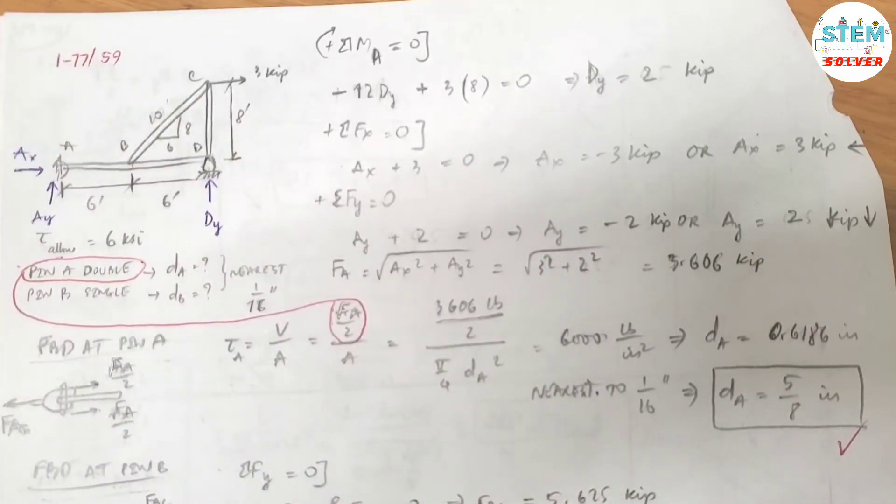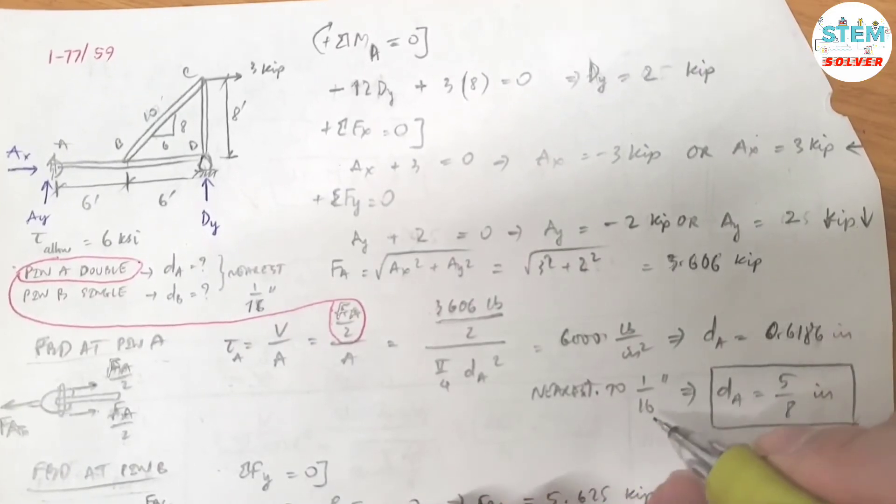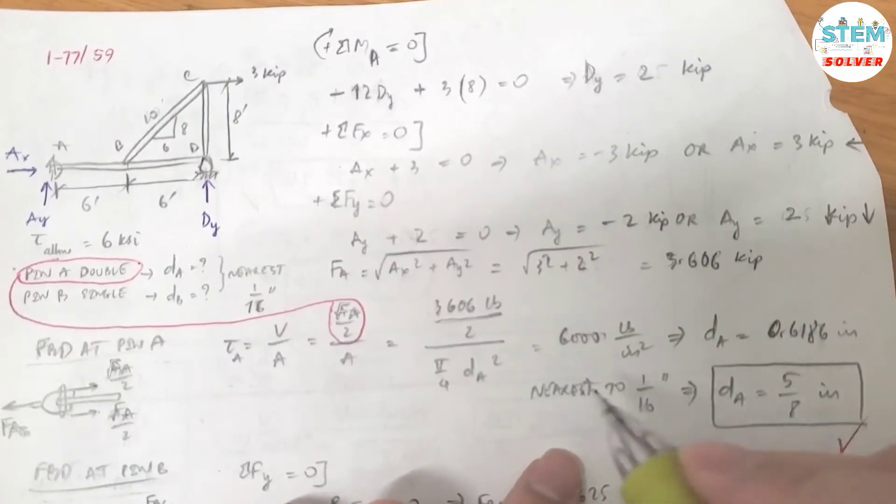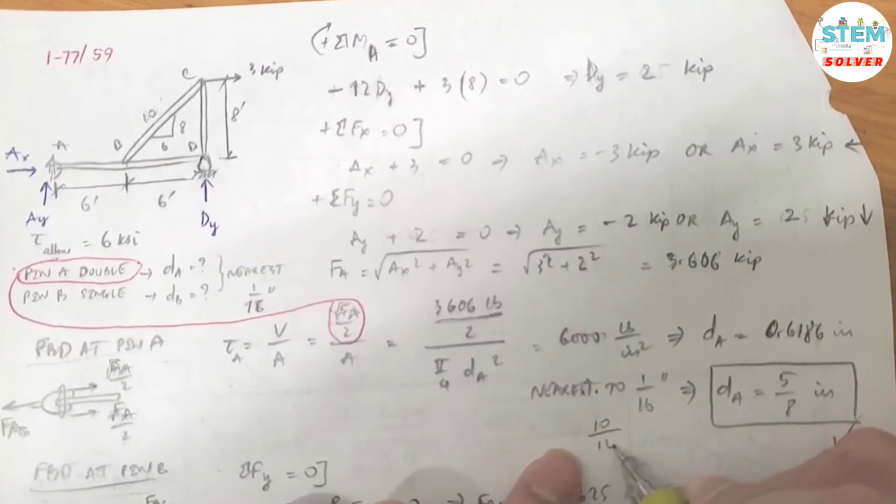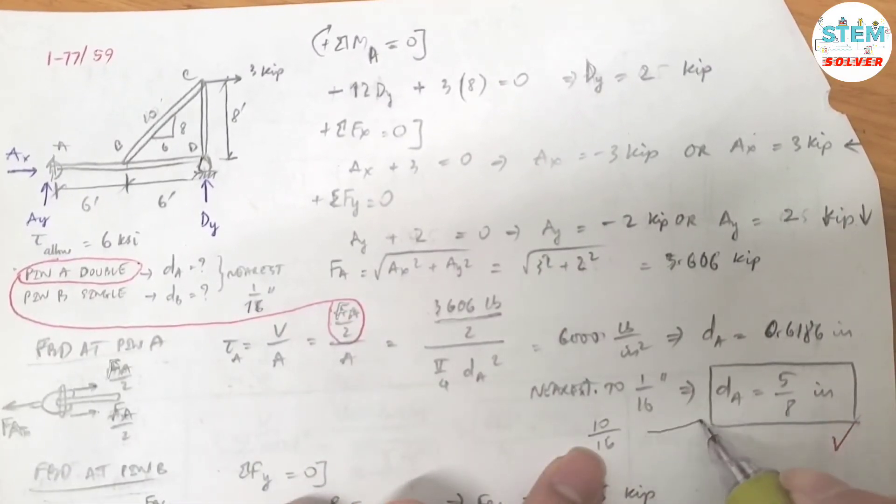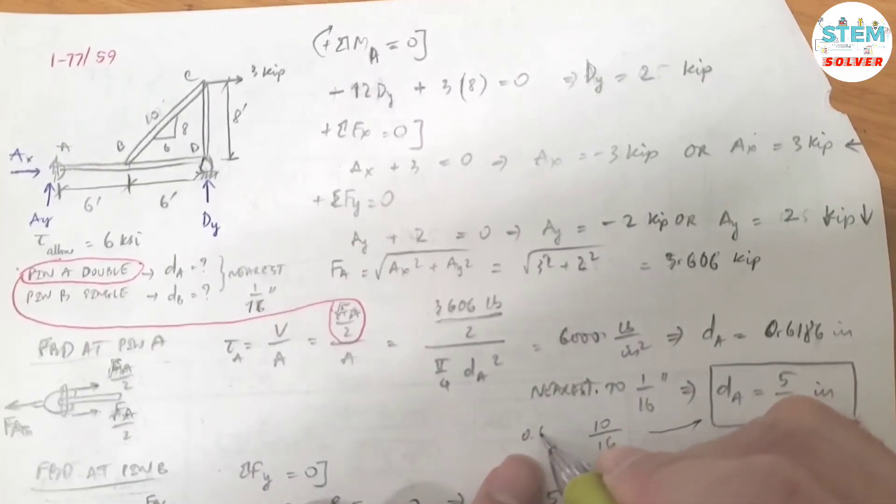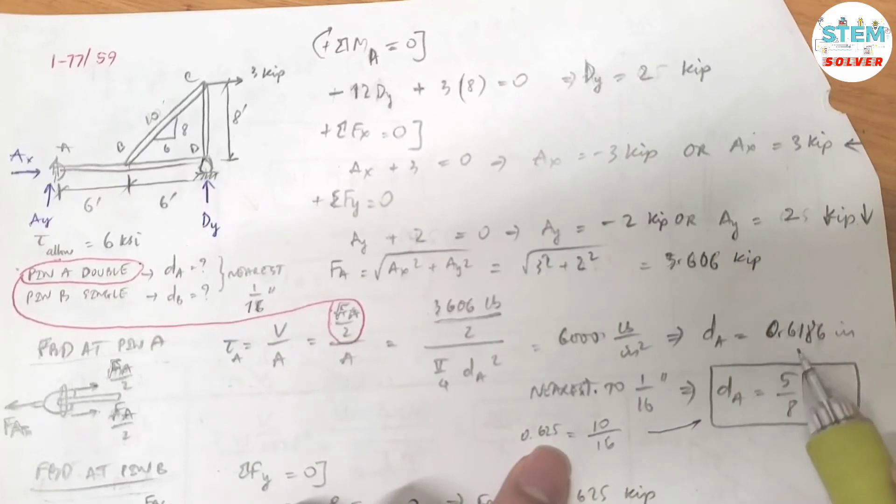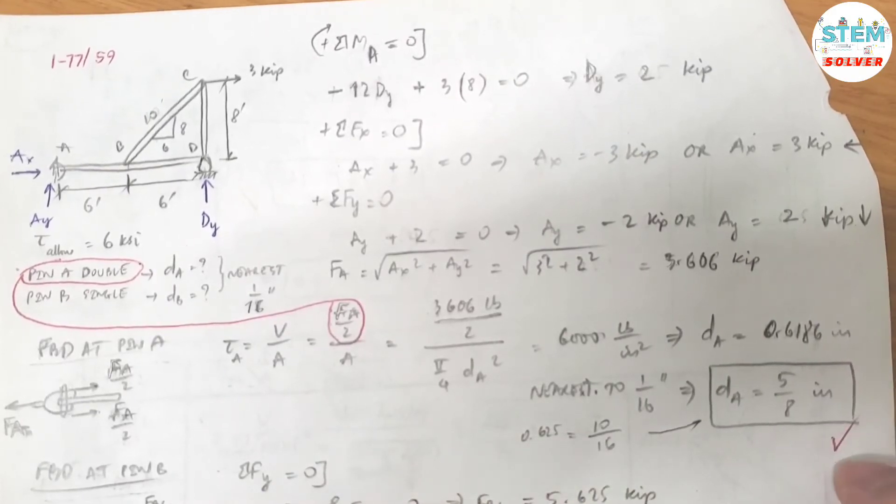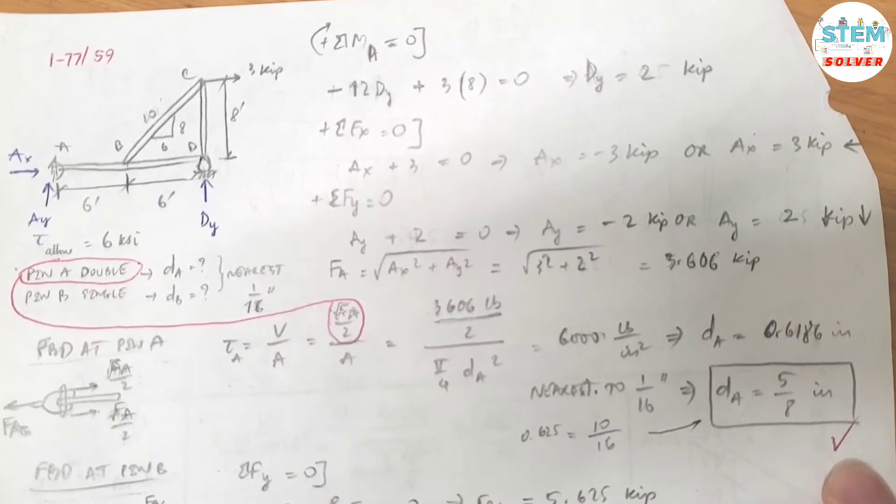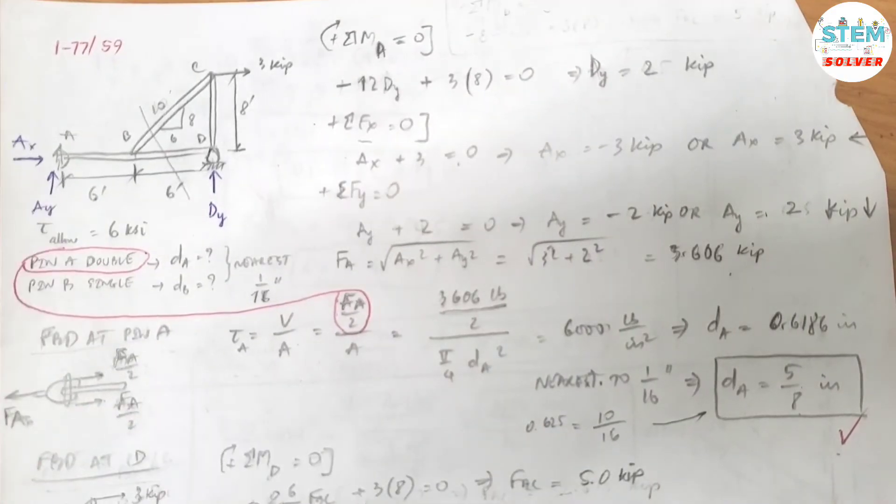Let me see what is 5 over 8 in fraction: 0.625. To the nearest 1/16th, multiply by 2, so I have 10 over 16. When I simplify it gives me 5 over 8, which is 0.625. That is greater than 0.618 or 0.619 if you round it up. So that is the diameter for pin A.